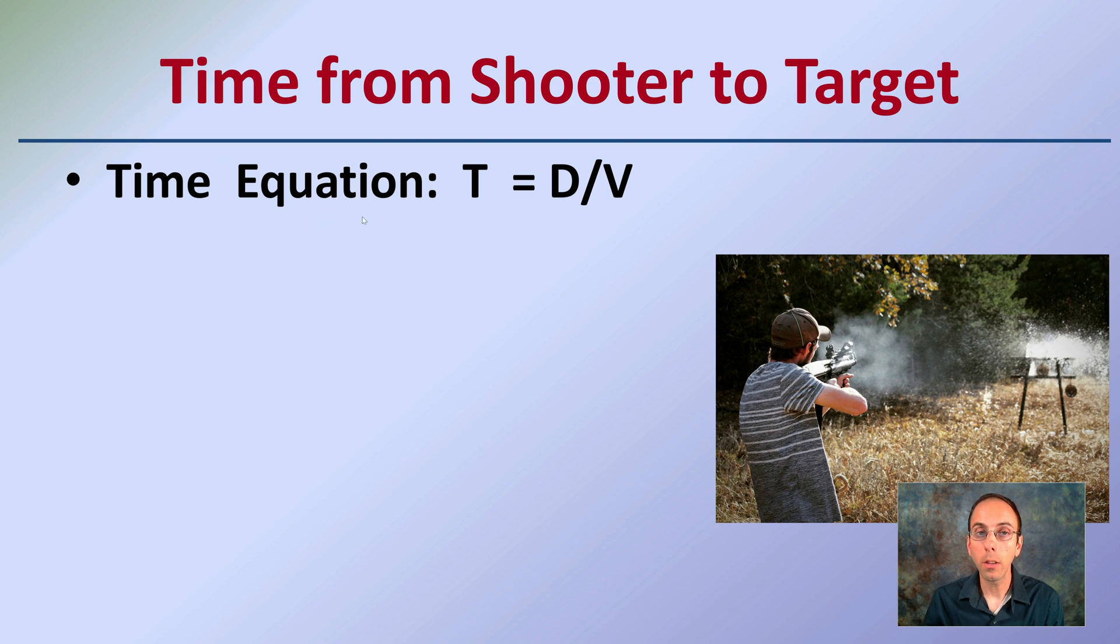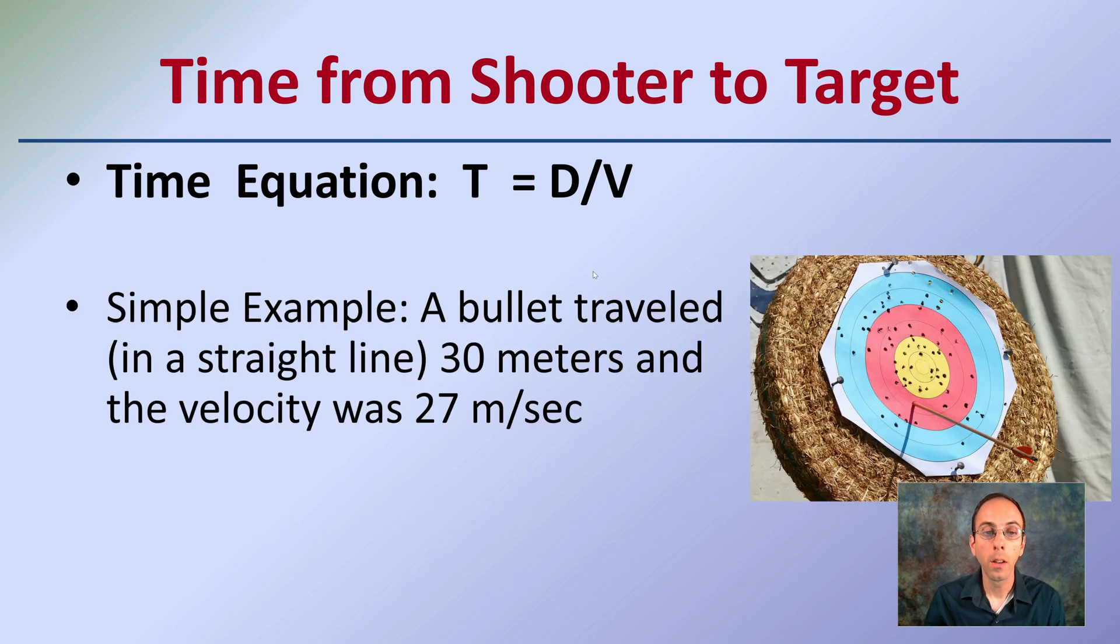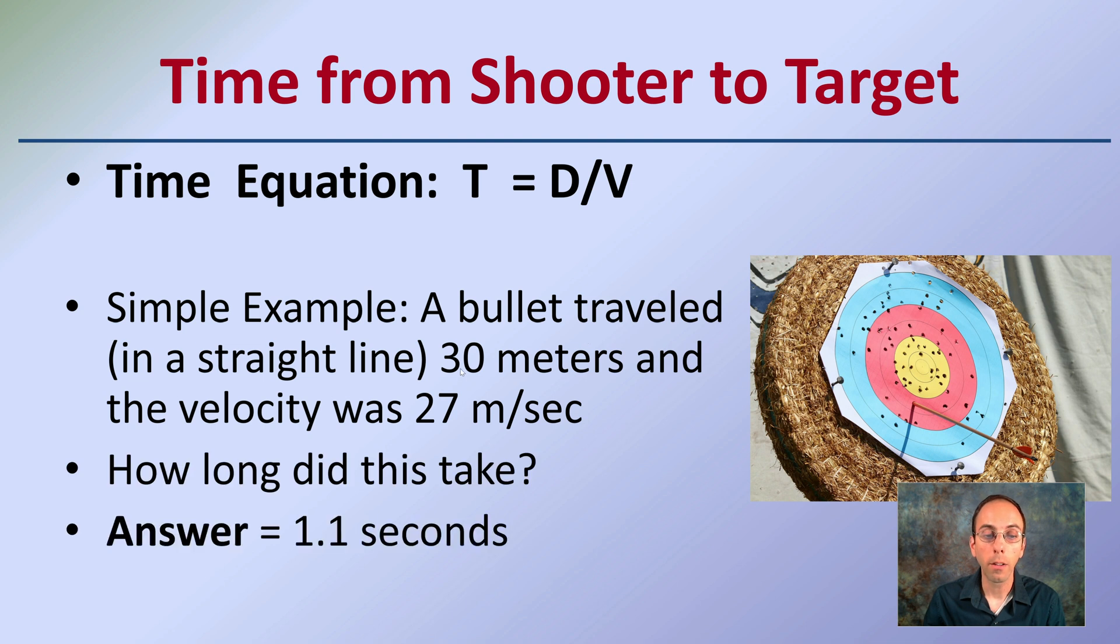Looking at that same equation that doesn't change here, a simple example: a bullet traveled in a straight line, we're assuming, 30 meters, and the velocity was 27 meters per second. So the question is, what's the time that the bullet spent traveling that distance at that speed? How long did this take? When we calculate this out, the answer would be 1.1 seconds. How did I get that? I take the distance, which would be 30, and divide it by 27, and that would get you 1.1 seconds.